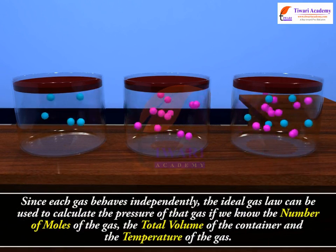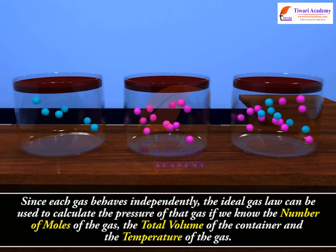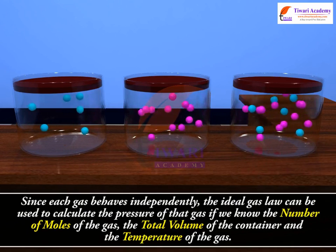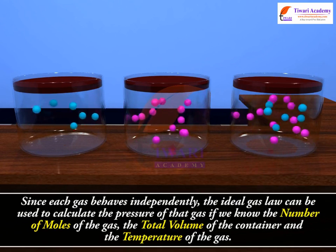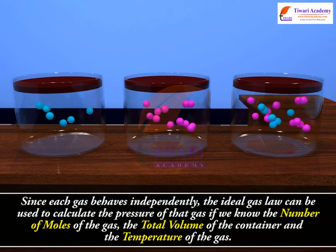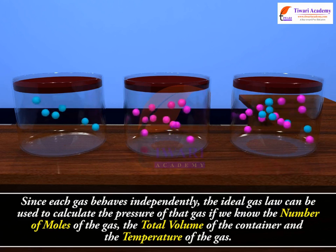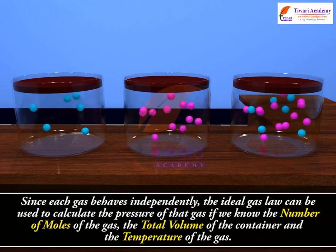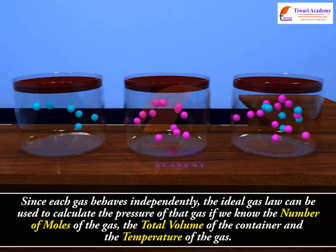Since each gas behaves independently, the ideal gas law can be used to calculate the pressure of that gas if we know the number of moles of the gas, the total volume of the container, and the temperature of the gas.